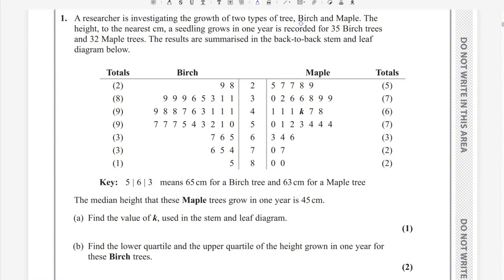Question number one: a researcher is investigating the growth of two types of trees — birch and maple. The height, to the nearest centimeter, a seedling grows in one year is recorded for 35 birch trees and 32 maple trees. The results are summarized in a back-to-back stem and leaf diagram. Data is given for birch on one side and maple on the other. From the key, for example, 65 is read one way and 63 another — similarly 28, 29, 25, 27.